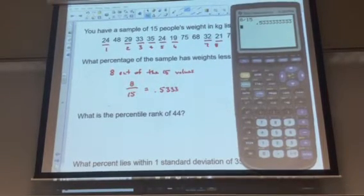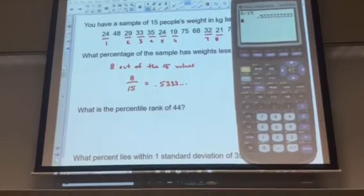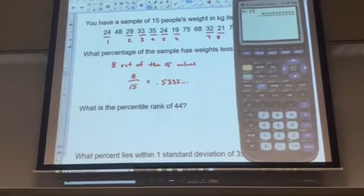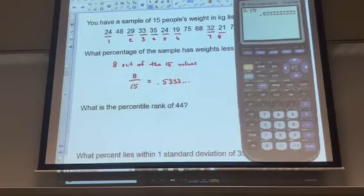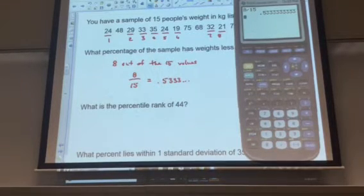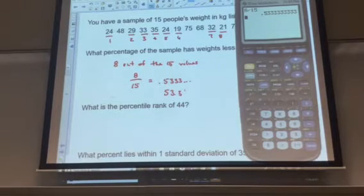5, 3, 3 repeating, and they will tell you if they want a decimal value or not when they're dealing with a percentage. So they may say accurate to one decimal place, you'd now be talking about 53.3%.